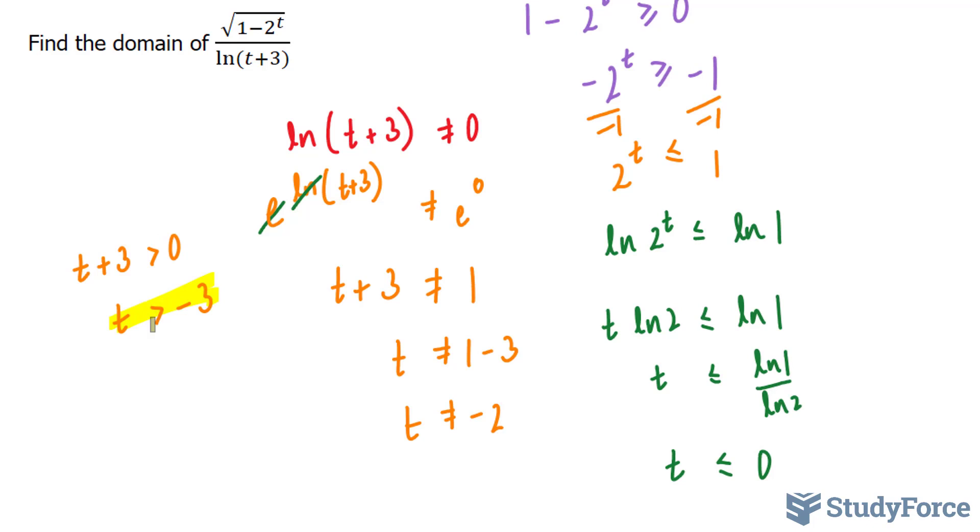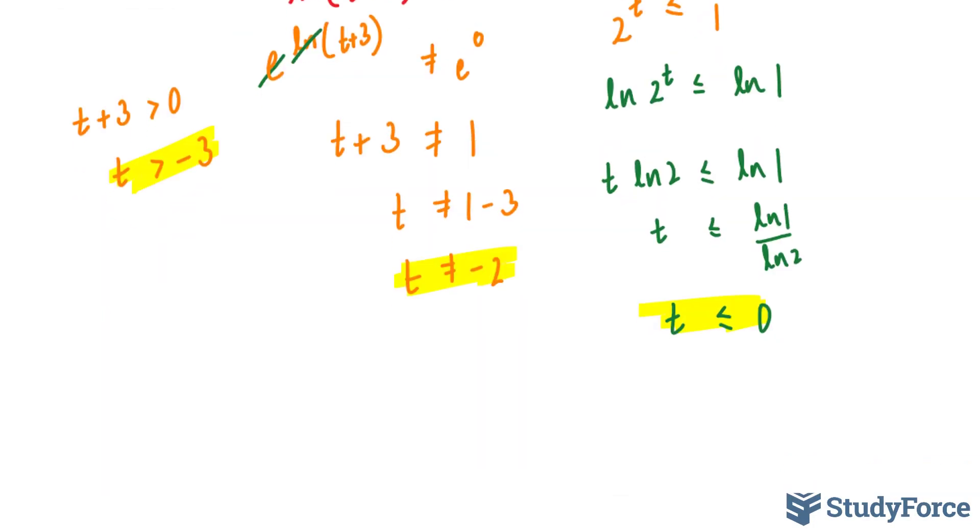So we have three restrictions. And to make sense of this, we'll write these down in a number line. And from that, we'll be able to derive our domain. Here's what I mean. We'll start with a number line, -2 and -3. And we know that t must be greater than -3. Since it cannot equal -3, we're going to use a hollow circle. And it moves this way, infinitely.